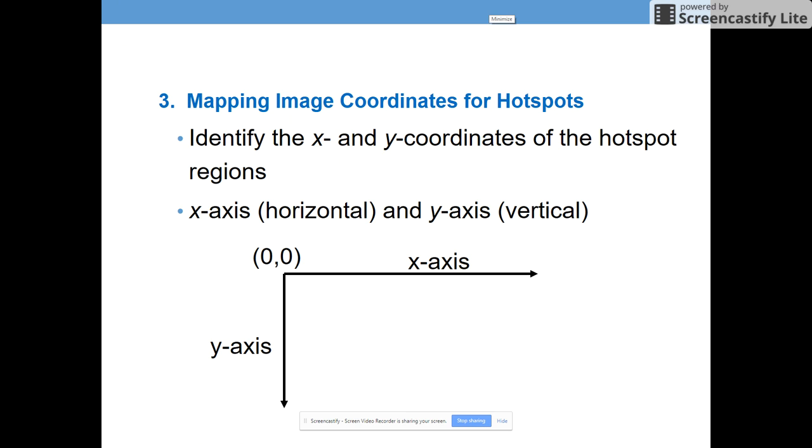So then our third step here is to actually map out the image coordinates for that hotspot. So you identify some key XY coordinates on that image. And now the key XY coordinates that you need differ depending on the shape of your image map. And we're going to talk about that on the next few slides. So if you choose a circle versus a rectangle versus a polygon, the key coordinates that you need are a little bit different.